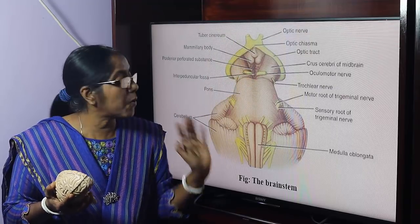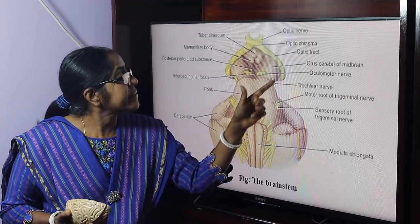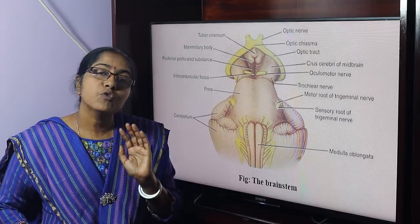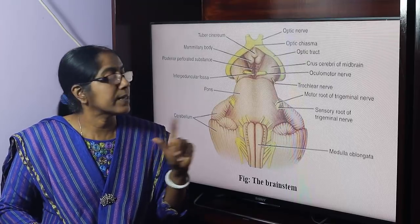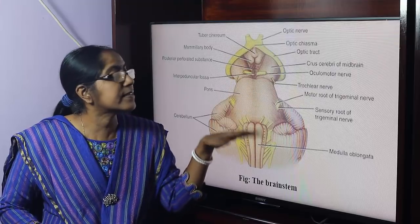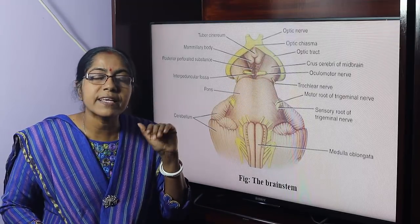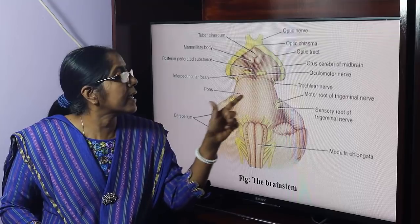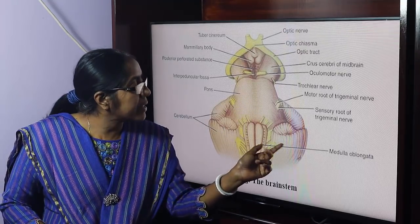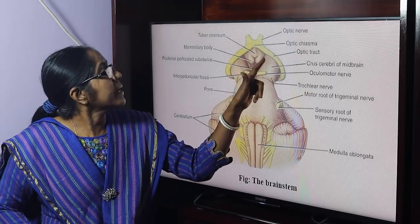The midbrain connects the forebrain with the hindbrain. The midbrain is connected with the cerebellum by the superior cerebellar peduncle. The cerebellum is attached to the brain stem by three peduncles: with the midbrain by the superior cerebellar peduncle, with the pons by the middle cerebellar peduncle, and with the medulla by the inferior cerebellar peduncle.